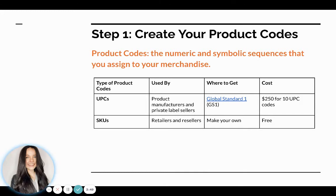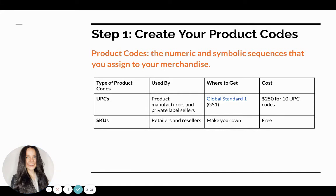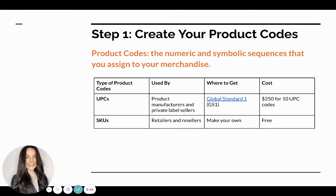Typically there are two main types of product codes. First, you have the Universal Product Code, which is used mainly by manufacturers and private sellers — people who are making their own products and selling lots of them. You create a product and then contact GS1, Global Standard One, which is a standardizing agency that gets you a standardized barcode required to sell on Amazon or look up a product online. Universal product codes do cost money — $250 for 10 codes — but the idea is that you create them in bulk, so those 10 codes go on lots of different products.